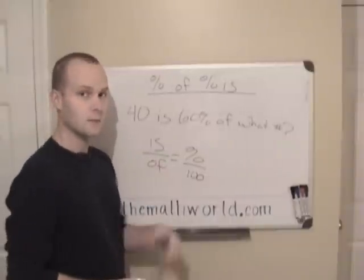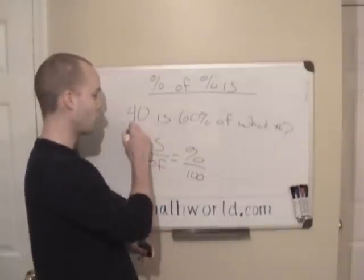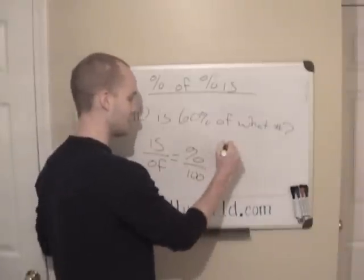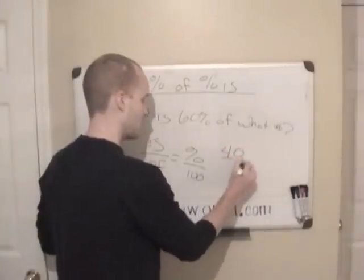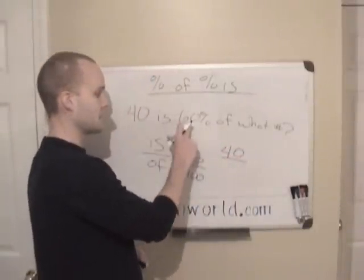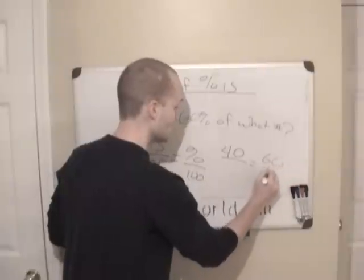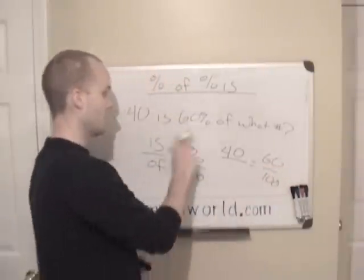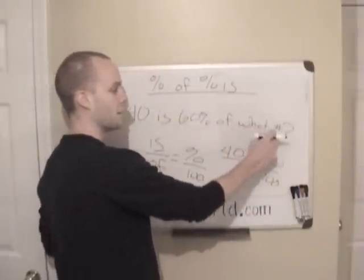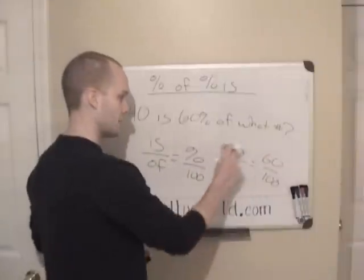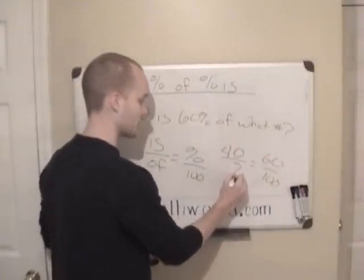So in this case, let's take a look at what they give us. 40 is, so right away we know that 40 goes into is. And then it says 60%, so 60 goes into percent. And then it says of what number, so we're trying to find of what number. So the of is a question mark.